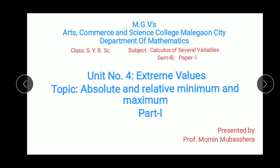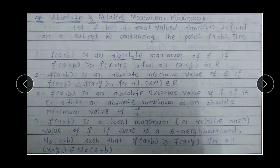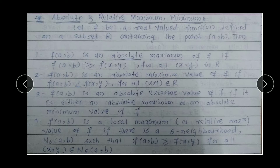First of all, we see the definition of Absolute and Relative Maximum and Minimum. Suppose F be a Real Valued Function defined on a subset R containing the point A, B. F is defined on set R, and set R consists of point A, B. Then F(A,B) is an Absolute Maximum of F if F(A,B) is greater than or equal to F(x,y) for all x, y in R.